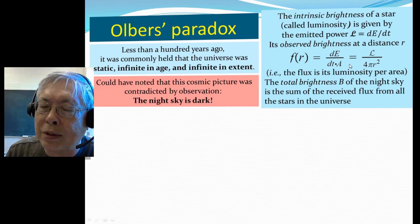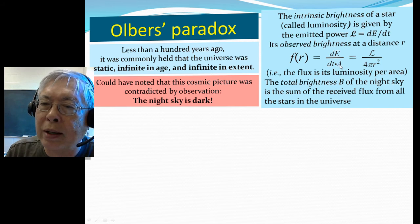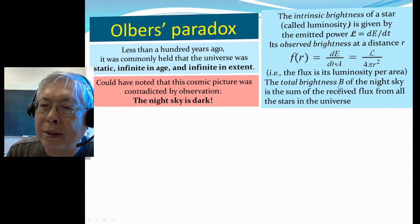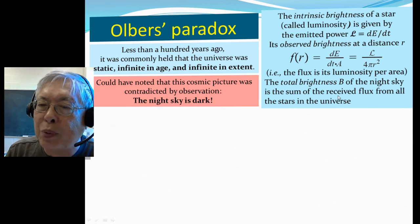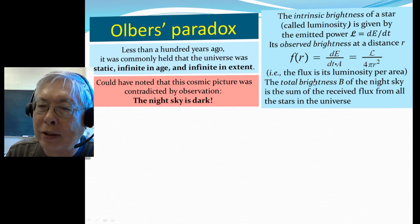Area, of course, presumed that emission is isotropic, so it's just this area of sphere with radius r. So the total brightness of the night sky is the sum of the received flux from all the stars in the universe, right? Because each one emits this amount, and then you have to add up all the contribution from all the stars.